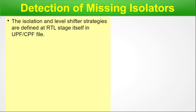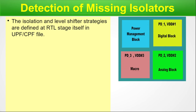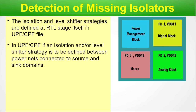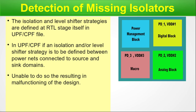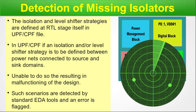Detection of missing isolators. The isolation and level shifter strategies are defined at the RTL stage using UPF or CPF files. In UPF or CPF, if an isolation or level shifter strategy is not defined between power nets connected to source and sink domains, it results in malfunctioning of the design. If any insertion of an isolation cell is missed where it is needed, this may lead to a malfunction of the chip during operation. Such scenarios are detected by standard EDA tools and an error is flagged.